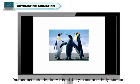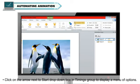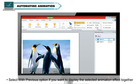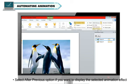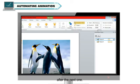Automating Animation: you can start each animation with the click of your mouse or simply automate it. To do so, follow these simple steps: select an animation from the Animations Pane, click on the arrow next to the Start dropdown box in the Timings group. Select 'With Previous' option if you want to display the selected animation effect together with the previous one. Select 'After Previous' option if you want to display the selected animation effect after the previous one.